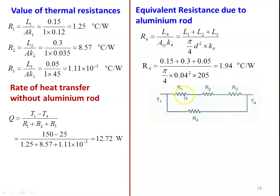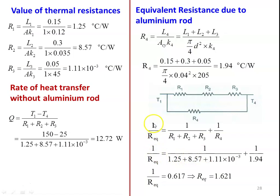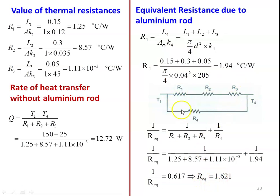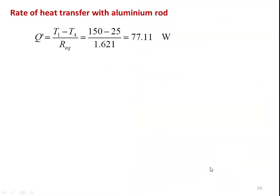For this configuration, R1, R2, R3 are in series and R4 is in parallel with the series combination. The equivalent resistance: 1/R_eq = 1/(R1 + R2 + R3) + 1/R4 = 1/(1.25 + 8.57 + 0.0011) + 1/1.94 = 0.617. Therefore R_eq = 1.621°C/W. Heat transfer with the aluminum rod: Q' = (T1 − T4)/R_eq = (150 − 25)/1.621 = 77.11 W.